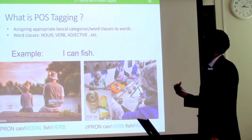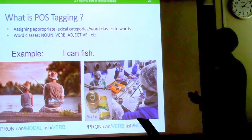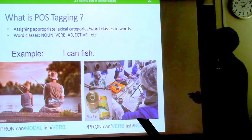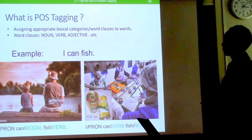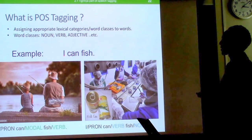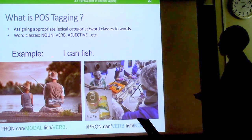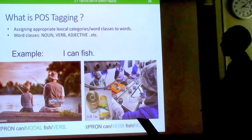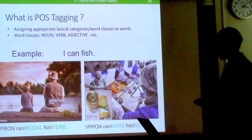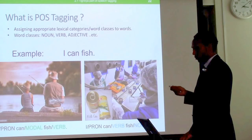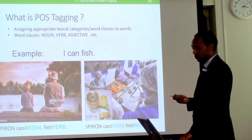Words, depending on the context, might have several POS roles. For example, the sentence 'I can fish' might mean the act of fishing or the act of canning fish. To resolve the intended meaning, POS tagging is useful: if 'can' is a modal, we're talking about fishing; if 'can' is a verb, we're talking about canning fish.